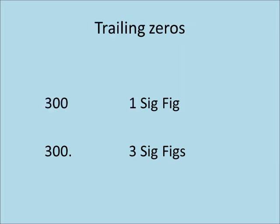Trailing zeros, however, are only significant if there is a decimal point placed after them, as in the numbers 300 and 300. In the first number, only 3 is significant, while all three numbers are significant in the second.